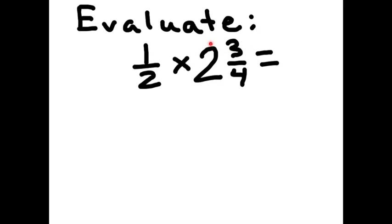But the easiest way to do this is to turn this mixed number into an improper fraction, and we do that by saying 2 times 4 plus 3. So let's rewrite it. We got 1 half times 2 times 4 is 8, plus 3 is 11 fourths.